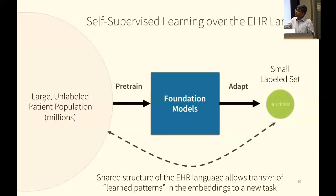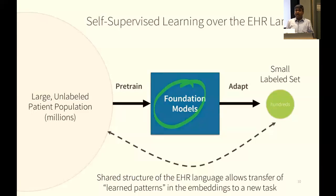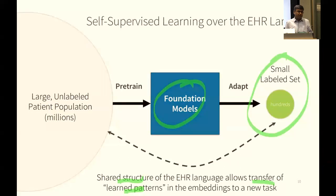The intuition here is that we can do some self-supervised learning over the EHR language. We have a large unlabeled patient population in the millions — timelines: what happened, then what happened, then what happened, for millions of patients. We can train a foundation model on it to predict the next code, or how many days till the next code, or how many days to a specific next code. This shared structure allows transport of these learned patterns to a new problem — such as building a classifier for who's going to develop lupus nephritis — and you don't need as many training examples. You can do it with like 60 examples. Few-shot. Sometimes even zero-shot.